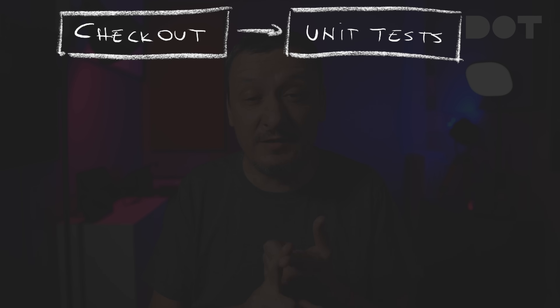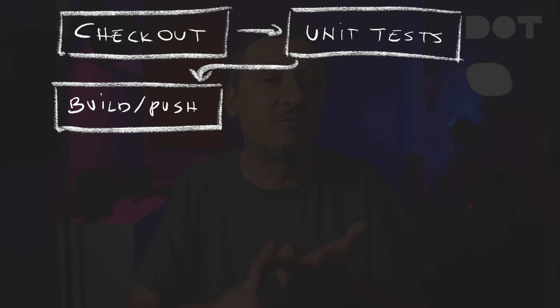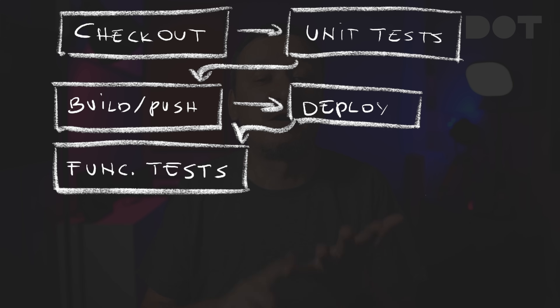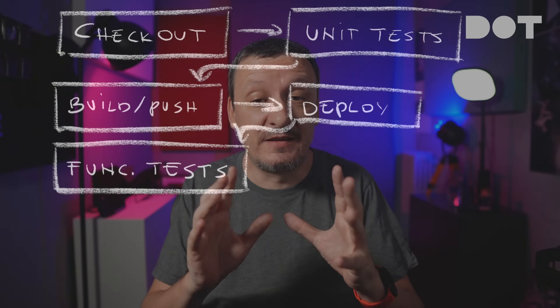Imagine the following steps: we check out code, we run unit tests, we build and push a new container image, we deploy a new release, and we run functional tests. Now, the whole process is often more complicated than that. Still, those few steps should be enough for me to make the point I'm about to make.